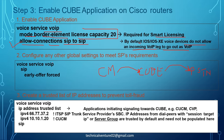Inside 'voice service voip,' specify 'sip' to use the SIP protocol, then use the command 'early-offer force.' This means every call going out from the gateway will include media capabilities in the initial INVITE — you are not waiting for the destination party to send you SDP. Early offer force means the calling party sends SDP messages containing whether it is an audio or video call, the port number, and codec details.